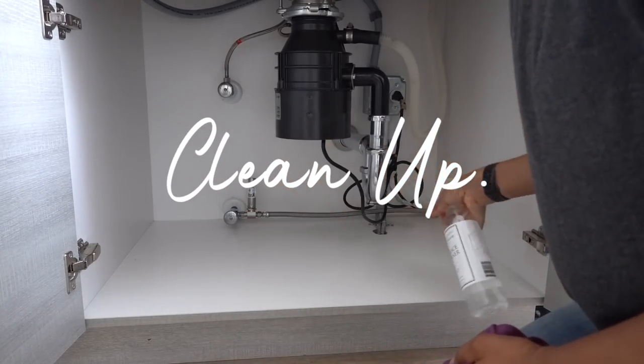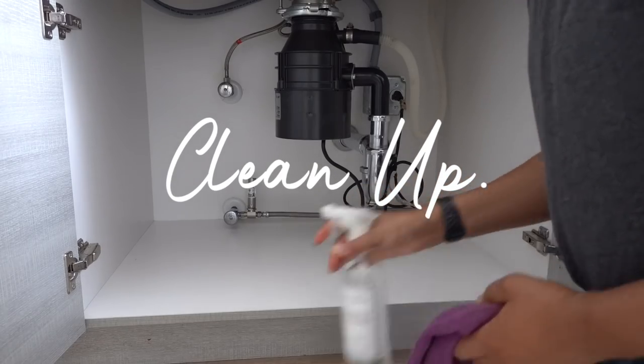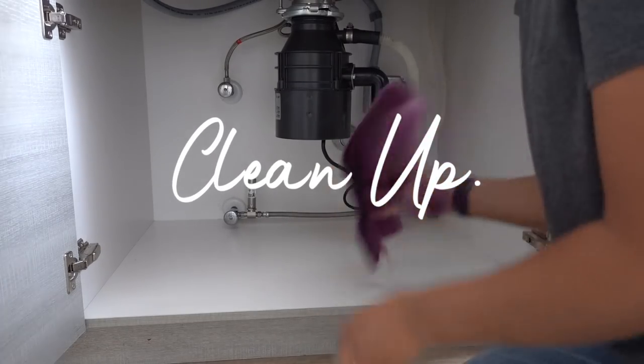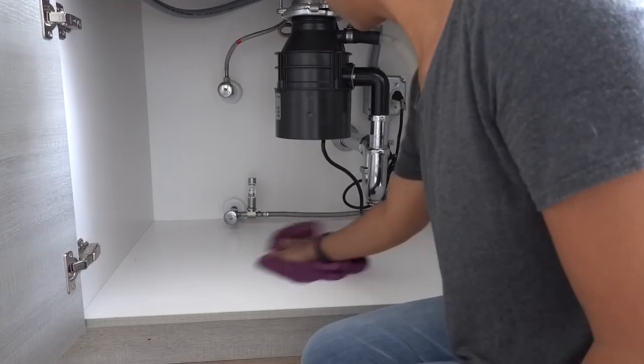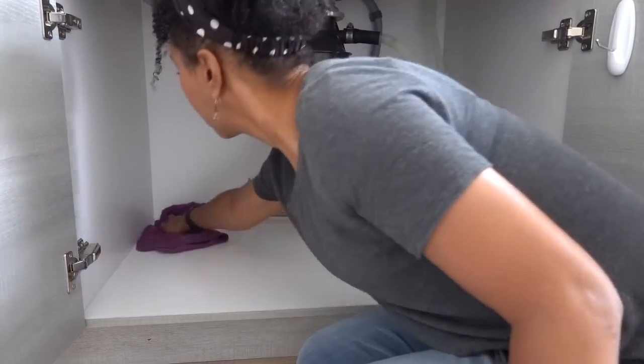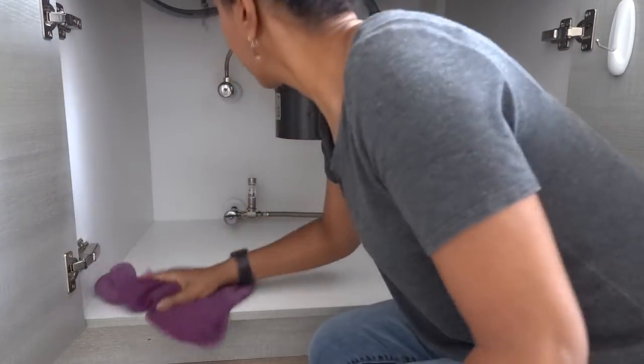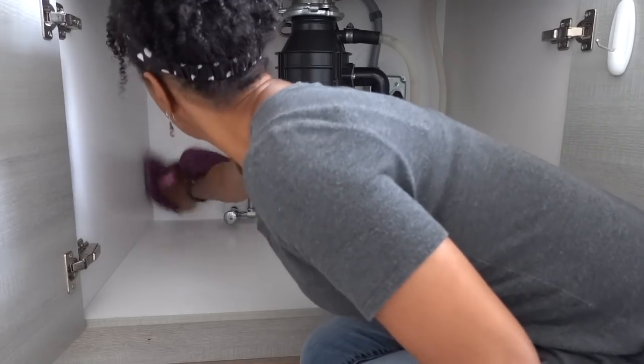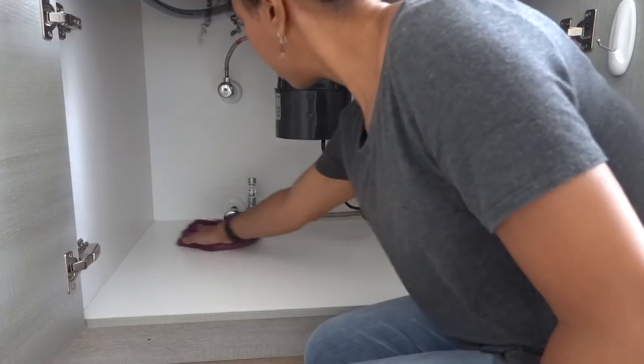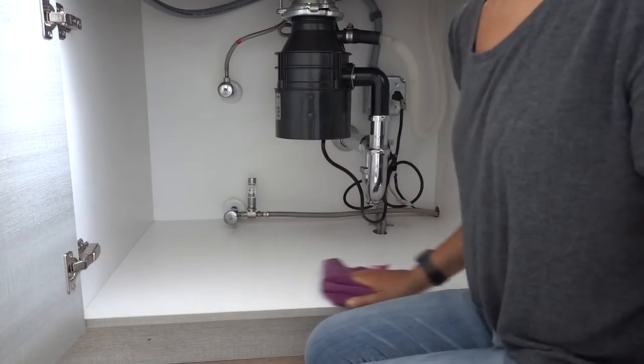The next thing you wanna do, of course, is clean up your cabinet. Under kitchen cabinets tend to be a little bit grody, because there is a lot of moisture under there. Sometimes pipes can leak, and stuff can get a little bit gross, so give it a good wipe down before you do any organizing or install any organizing solution.